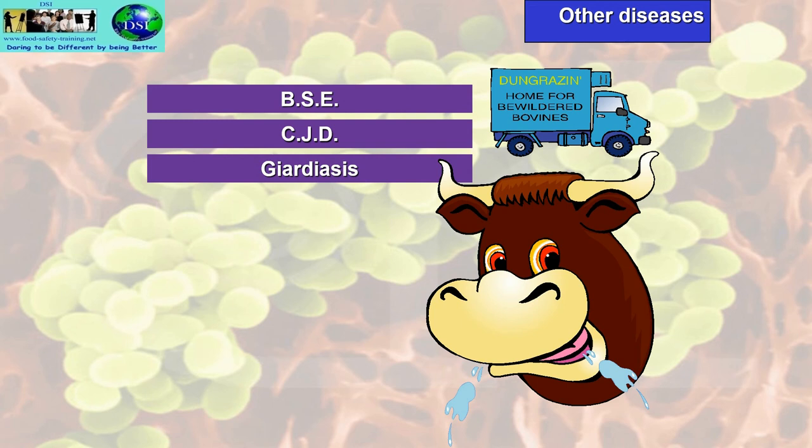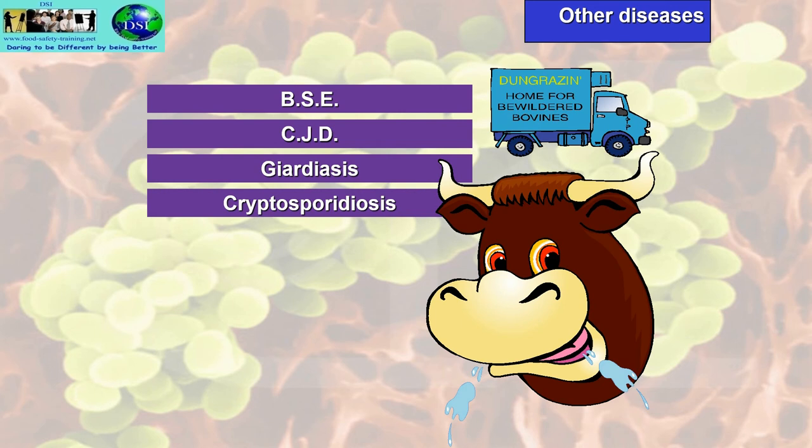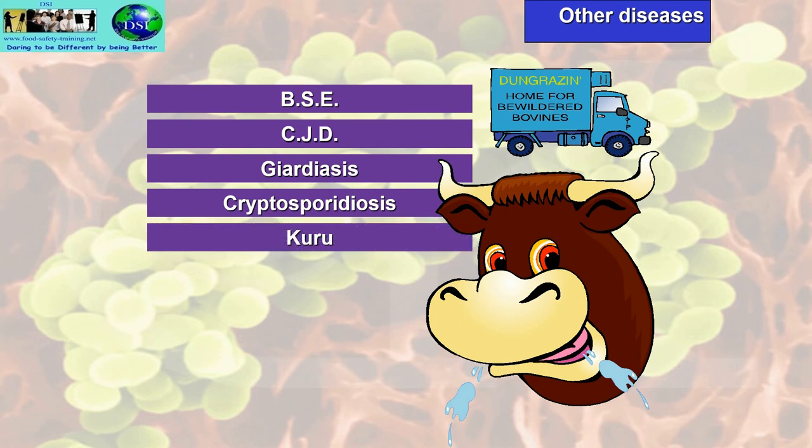Giardiasis is a parasite present in infected water. Cryptosporidiosis is another parasite. Kuru is very similar to CJD.